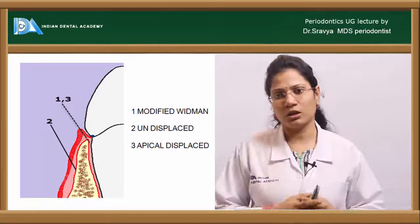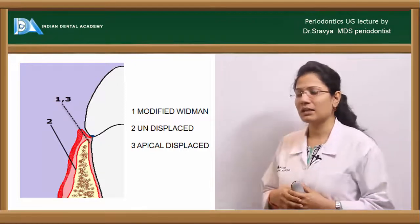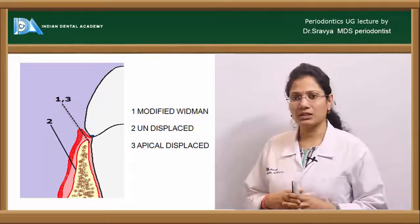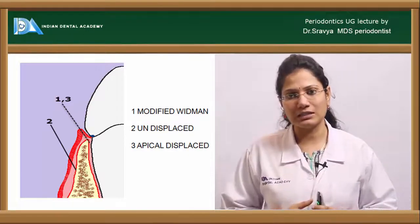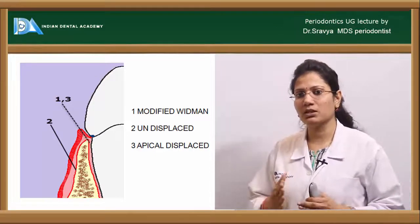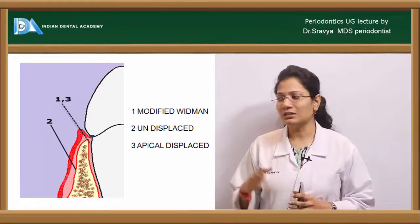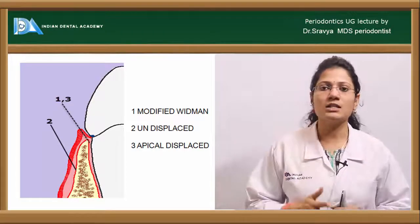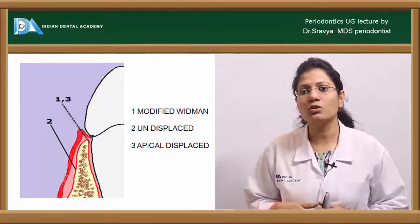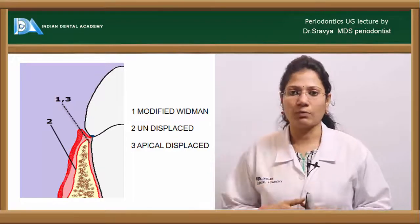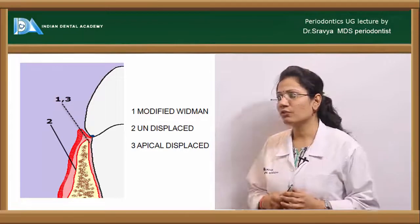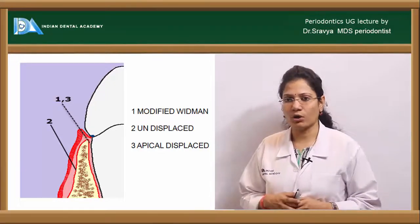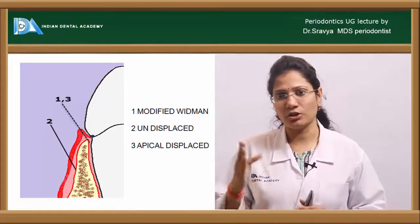For the modified Widman and apically displaced flap, the internal bevel incision is given approximately 0.5 to 1.5 millimeters away from the gingival margin, directed towards the alveolar crest. For the undisplaced flap, you start the incision approximately 2 to 3 millimeters away from the gingival margin towards the alveolar bone.